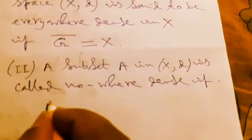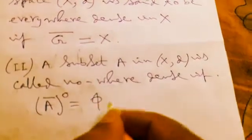if A bar degree, closure of interior of A, is equal to empty, where we know bar denotes closure.